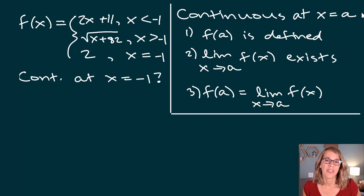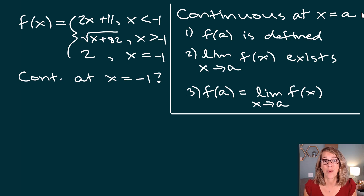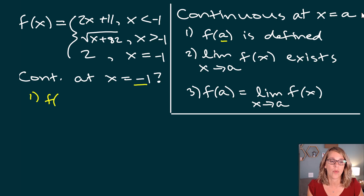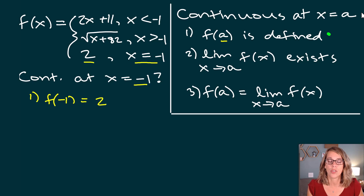Let's look at an example. We've got a piecewise function and we want to test continuity at negative one. Step one: we want f of a, where a is negative one. When x equals negative one, our function value is equal to two. So it is defined there — condition one is satisfied.